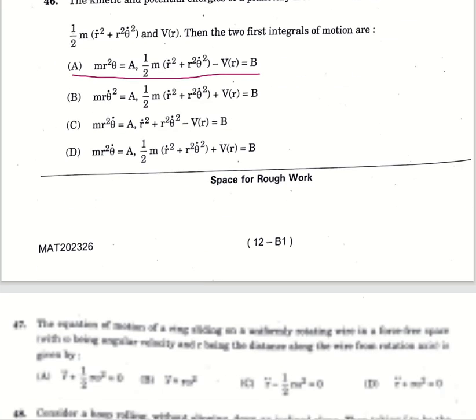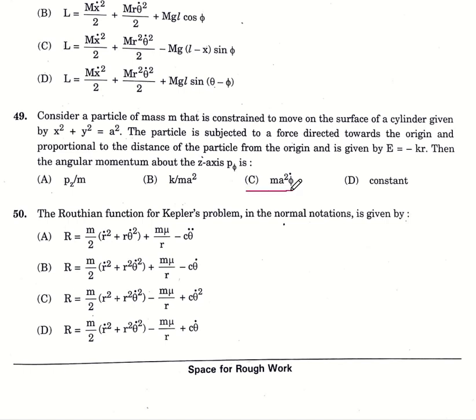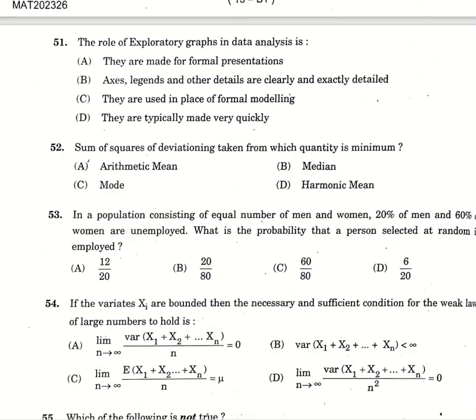Forty-seven, these questions are basically physics-based. The equation of motion of a ring sliding on a uniformly rotating wire in a force-free space with omega being an angular velocity and r being the distance along the wire from rotation axis is given by option number A. Forty-eight question, consider without slipping down an inclined plane, then taking L to be the length of the inclined plane and theta be the acute angle it makes with the horizontal, Lagrangian is given by option number A. Forty-ninth, the angular momentum of both zigzag axis P5 is option number C. Fifty, the Routhian function for Kepler's problem in normal rotation is given by option number A. Fifty-one, the role of exploratory graphs in data analysis, they are typically made very quickly, option D. Fifty-second, sum of squares of deviation taken from which quantity is minimum? Arithmetic mean, option A.